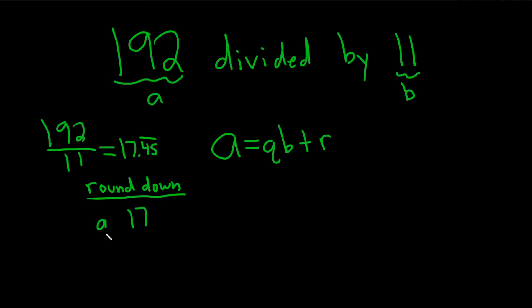So that's our quotient. That's going to be part of our answer. To find the remainder, you just take all of your numbers and you plug them into your equation. So A is 192, Q is 17, and then B is 11, and then plus R. So we have to figure out the remainder.